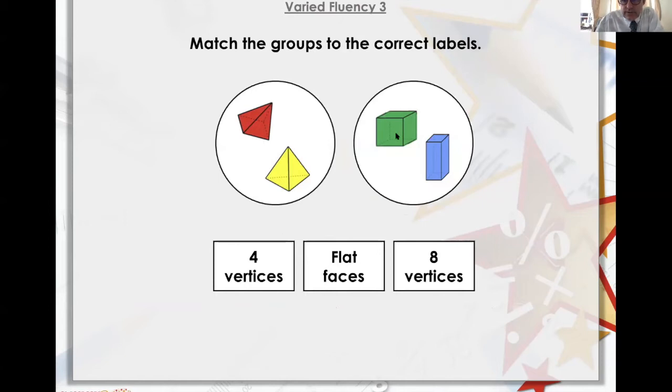One, two, three, four, five, six, seven, eight vertices. One, two, three, four. That's just eight vertices. So that's eight vertices, that one. Four vertices. One, two, three, yeah.